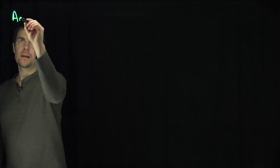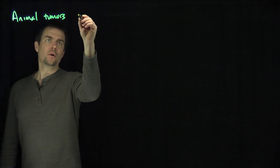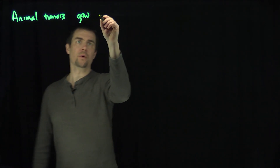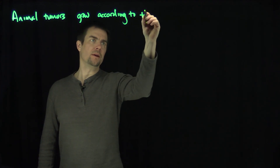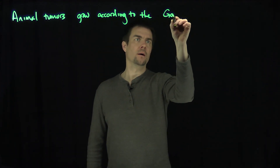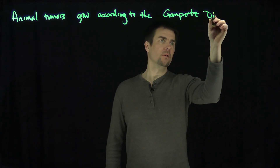Hello students. In this video we'll discuss a differential equation which has been seen to model the rate of growth of tumors in animals, known as the Gompertz Model of Differential Equations Growth. It's been studied that animal tumors grow according to the Gompertz Law Differential Equation Law.